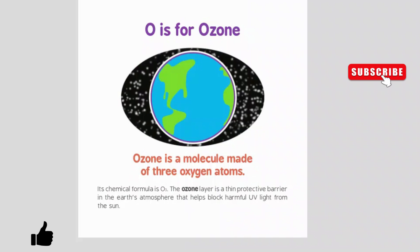O is for ozone. Ozone is a molecule made of three oxygen atoms. Its chemical formula is O3. The ozone layer is a thin protective barrier in the Earth's atmosphere that helps block harmful UV light from the sun.